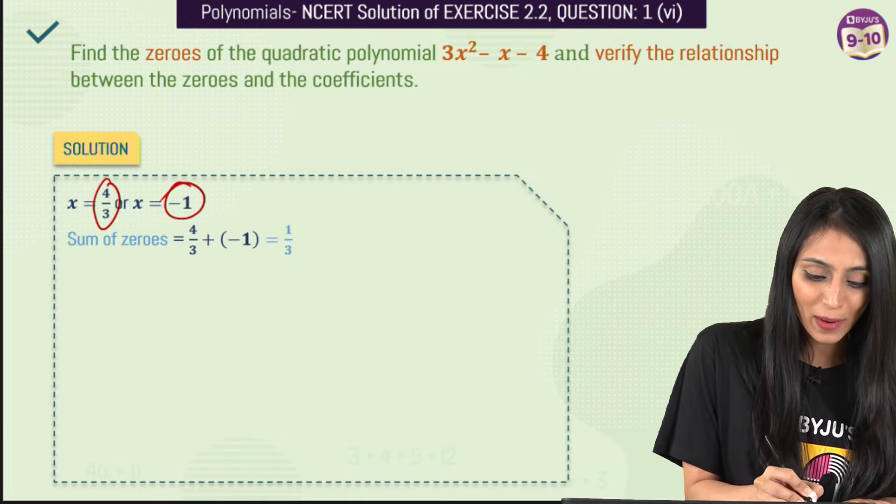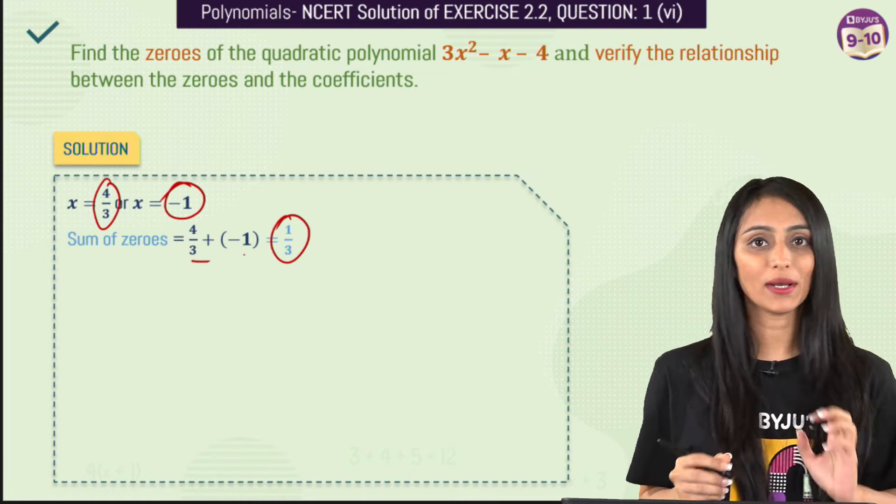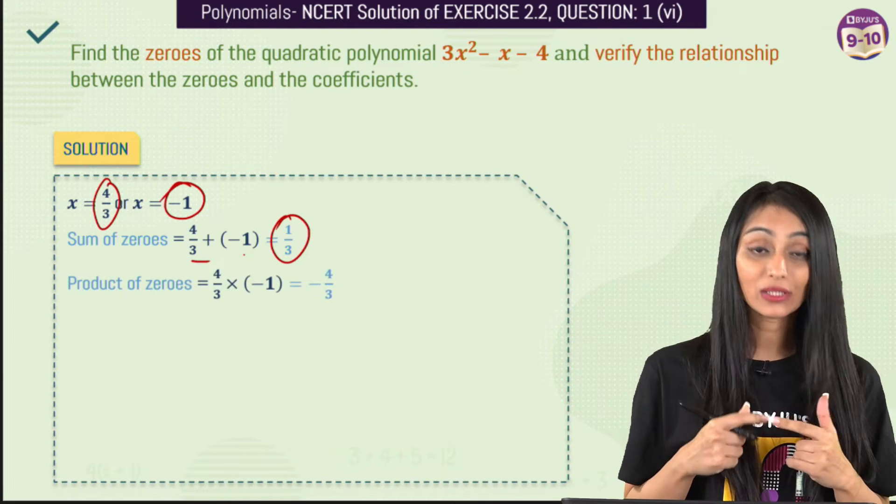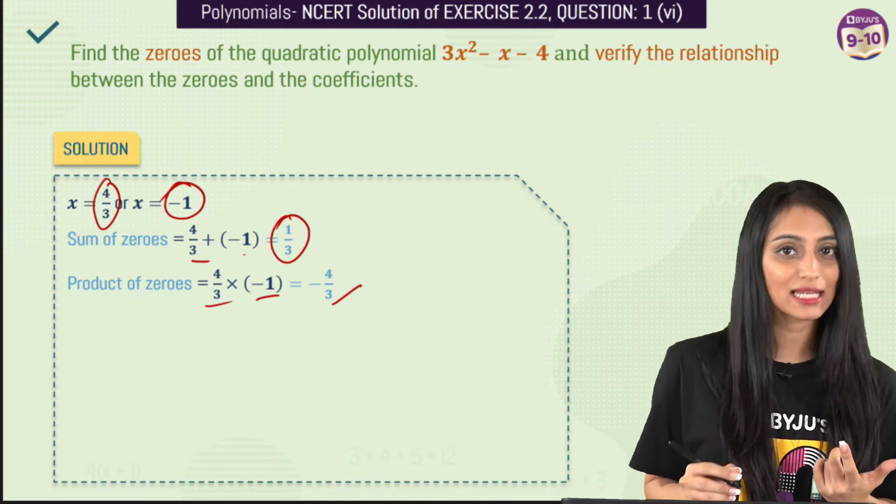What do we get? 4/3 plus -1. We will take LCM and simplify this and we are going to get 1/3. Similarly we will find out the product of zeros which is 4/3 times -1 which is going to be -4/3.